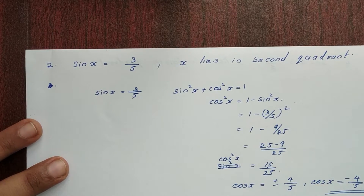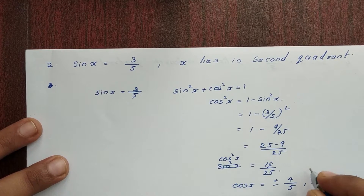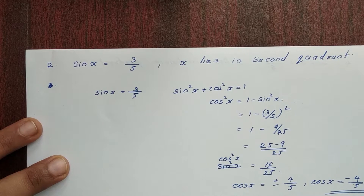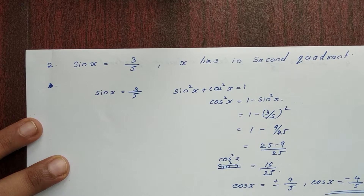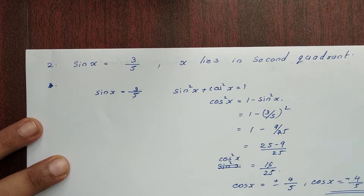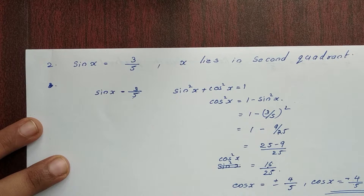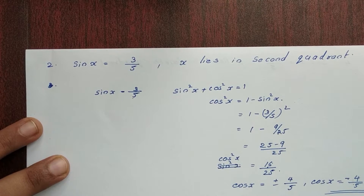From cos x, we get sec x, which is the reciprocal. So sec x is equal to minus 5 by 4.